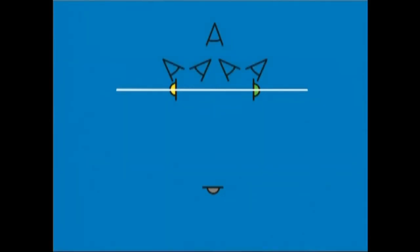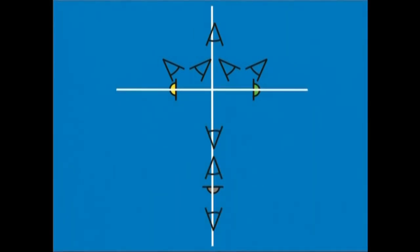Eskenaren hasieran, pantailaren goialdean dauden aktoreak dira, horiz eta berdez jantzitakoak alegia, antzezpenaren pisua jasaten dutenak. Ekintzaren ardatza beraz, eskemako lerro horizontala edo errara izango da. Baina alako batean, behaldean dagoen aktoreak, grisez jantzitakoak alegia, haien elkarrizketan parte hartzea erabakitzen du. Ardatza eskemako goitik beherako lerroa izango da.